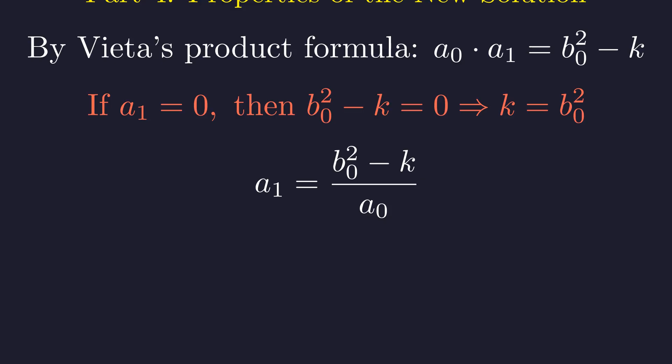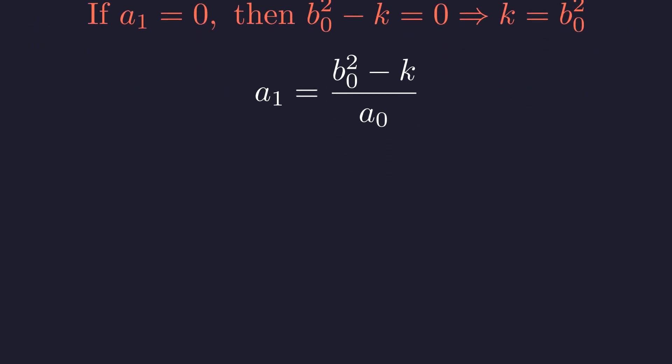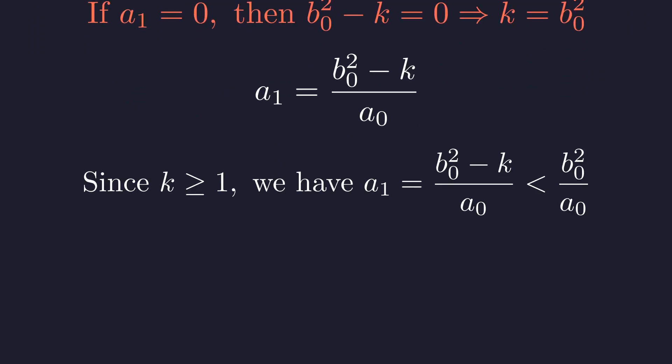From Vieta's product formula, we can also express a1 as b0 squared minus k, all divided by a0. This equivalent form will help us bound the size of a1. Since k is a positive integer, the numerator is strictly less than b0 squared, so a1 is strictly less than b0 squared divided by a0.